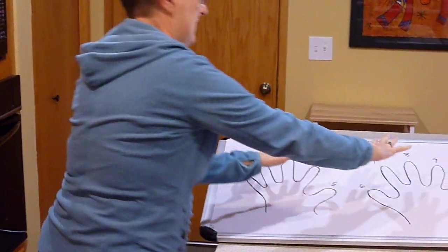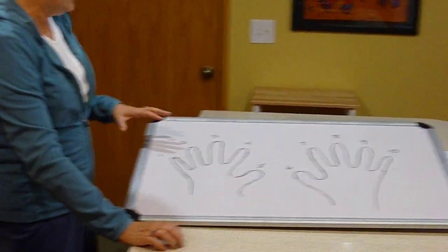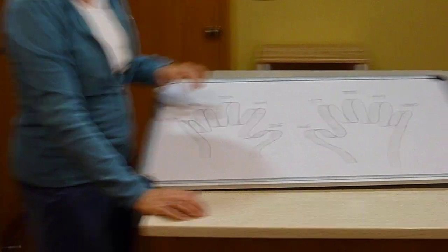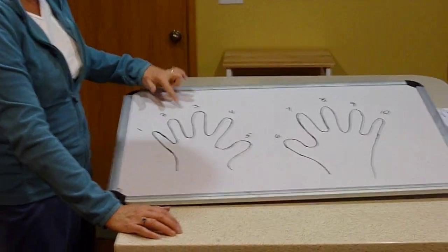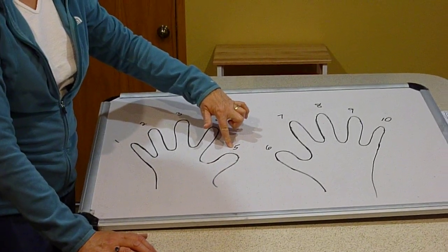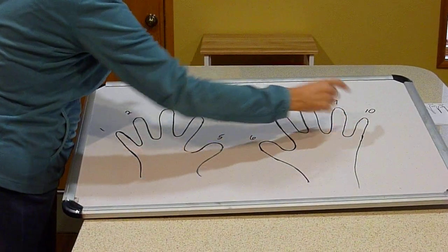The first thing I do to teach the kids their threes and fours is I make sure that if they hold their fingers in front of them like this, so they're looking at the back of their hands, that they know what number each finger would be if they were counting to ten, so one, two, three, four, five, the first thumb on the left hand is five, six, seven, eight, nine, ten.